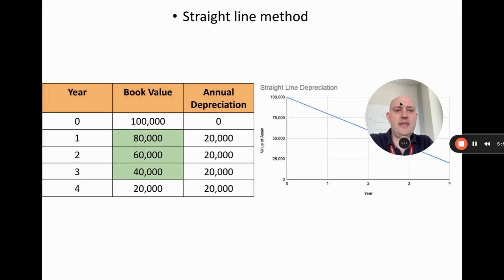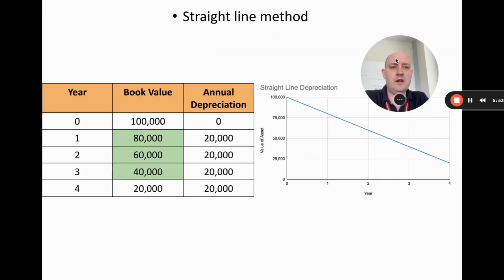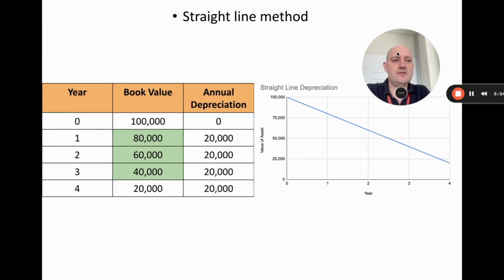This gives us a graph where the value of the asset goes down in a perfectly straight line over time — that is the straight line depreciation method.